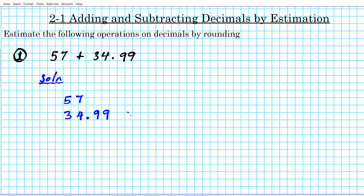So what we're going to do here is round both numbers to the highest place value. Starting with 57, the highest place value is the tens place. So we're going to be rounding to the tens place for 57, and then for 34.99 it's also the tens place that we'll be rounding to. So we're going to apply the rounding methodology we went over in our previous unit, 1.6.